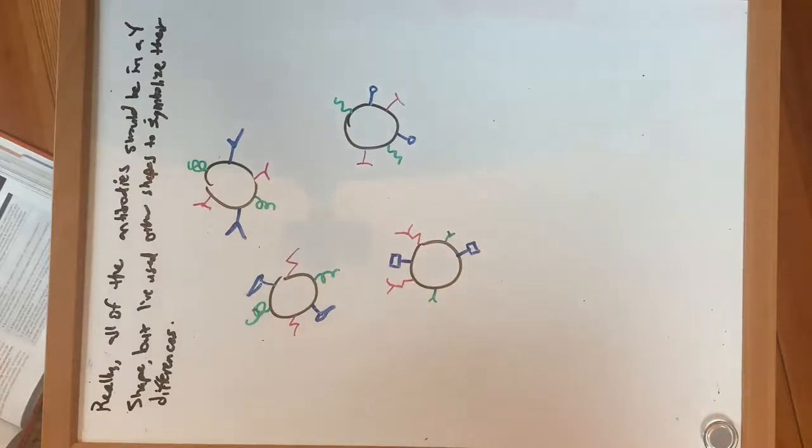And the way that clonal expansion works is that the cell or a cell that has an antibody that can bind to whatever antigen is present is then going to multiply. And so it really is just a matter of which cell is activated, and the activation occurs again through the binding of the antibody on the cell to an antigen.